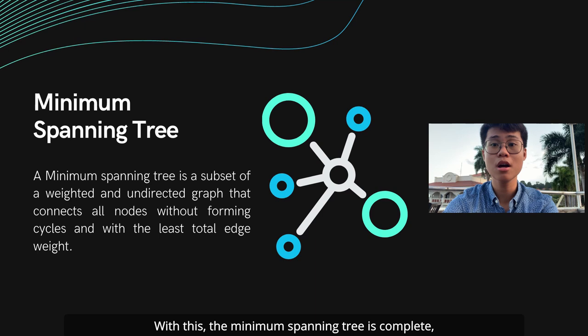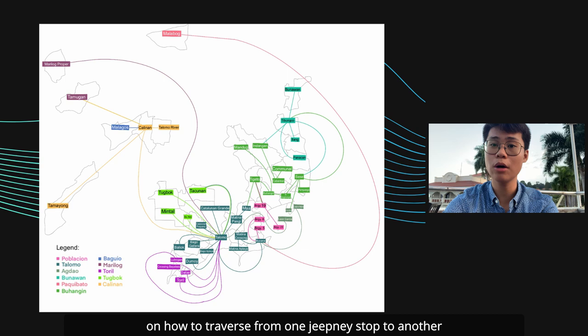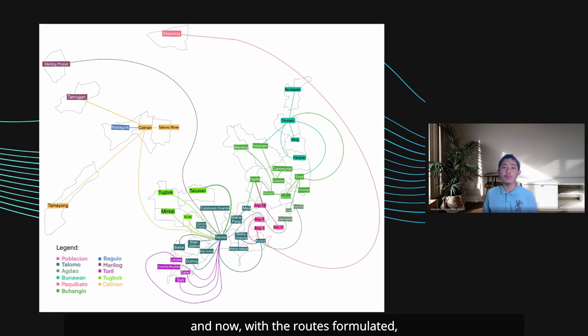The tree then contained information on how to traverse from one jeepney stop to another while considering the three criteria in the best way possible. And now with the routes formulated,